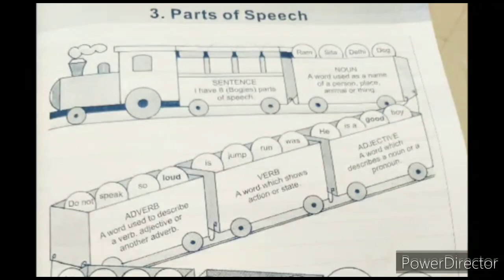So the first one is noun. What is a noun? A noun is a word which is used as a name of a person, place, animal or thing. Like ram, sita, delhi, dog. So anything which has a name is a noun.